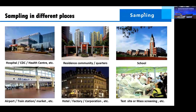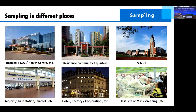The first step is sample collection. Sample collection can be arranged in different places such as in hospitals, the CDC (Centers for Disease Control), health centers, residential communities and quarters, schools, airports, transportation hubs, train stations, markets, hotels, factories, corporations, and mass screening test sites.